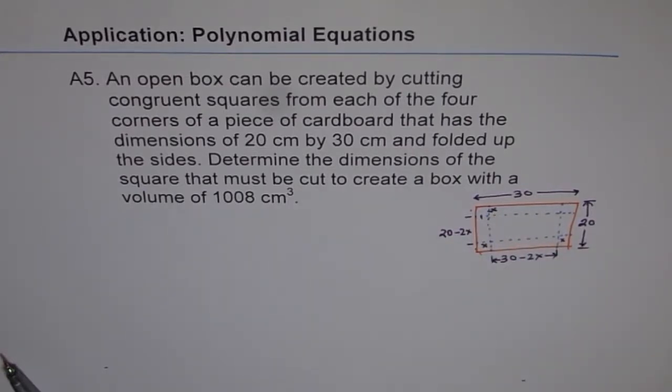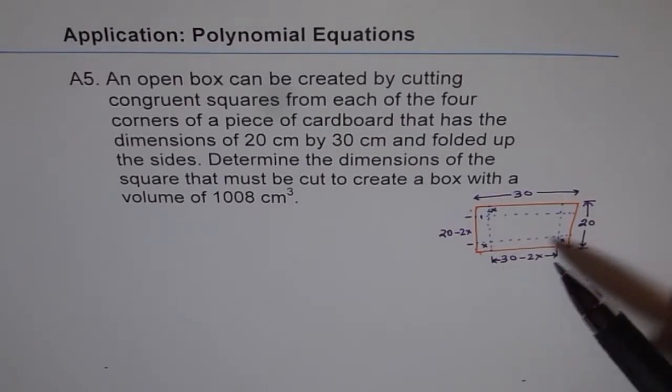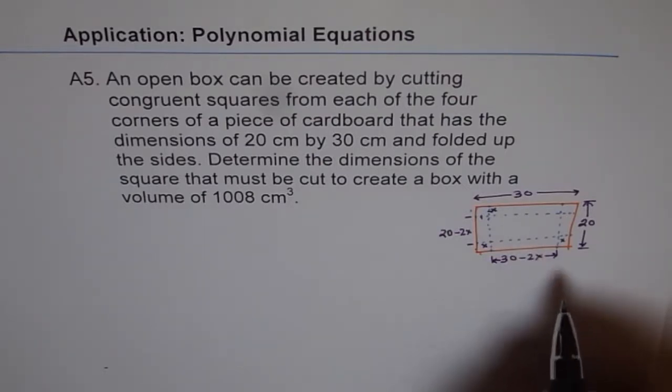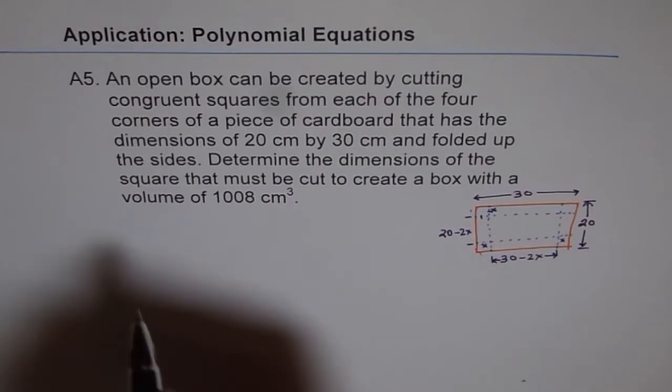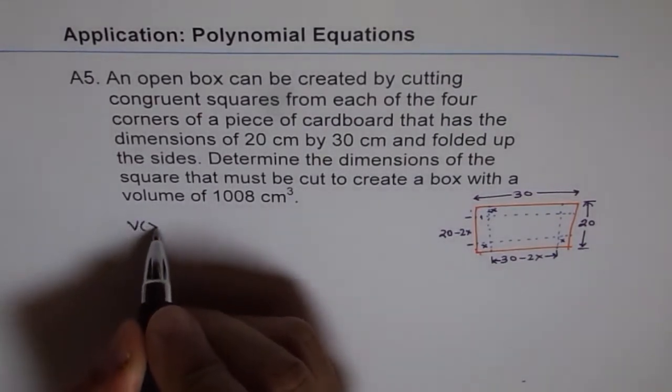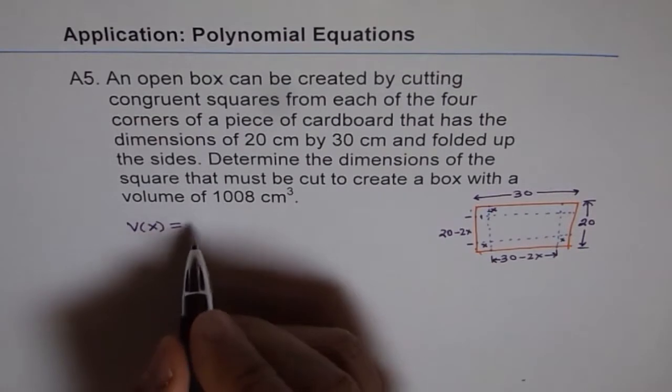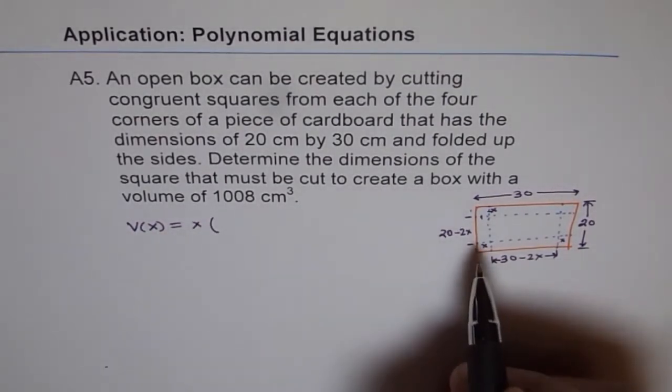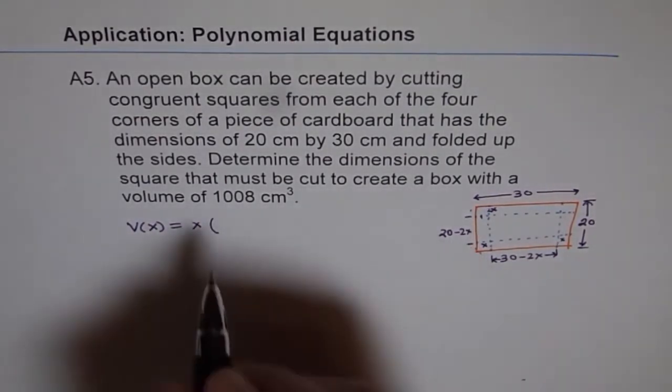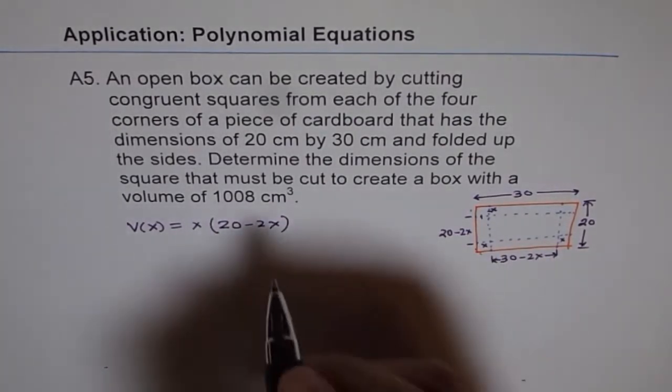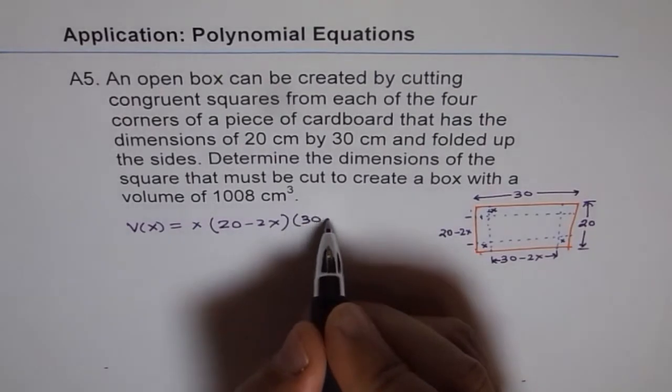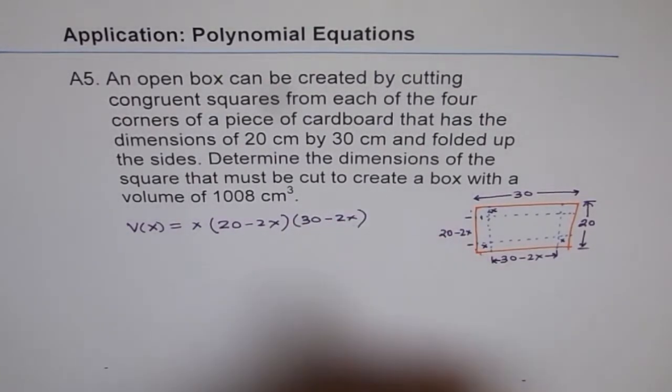So try to understand this question. At times I have seen students will just write 30 minus x and 20 minus x and complete the problem. So that is the first part, and that gives us the volume. And therefore the volume as a function of x for the box will be equal to height is x, width of the box will be 20 minus 2x, and length of the box will be 30 minus 2x.